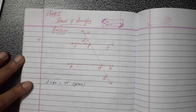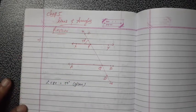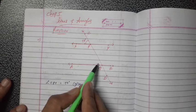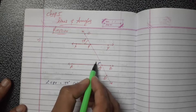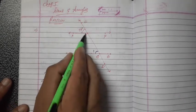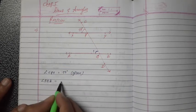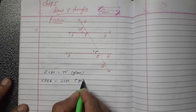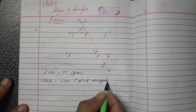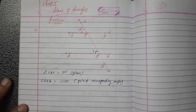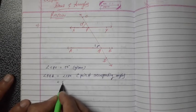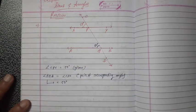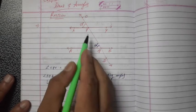Since CPX is an exterior angle, we take the corresponding interior angle on the downside, which is angle PQA. Angle PQA is equal to angle CPX because they are a pair of corresponding angles. So angle PQA = 50 degrees.